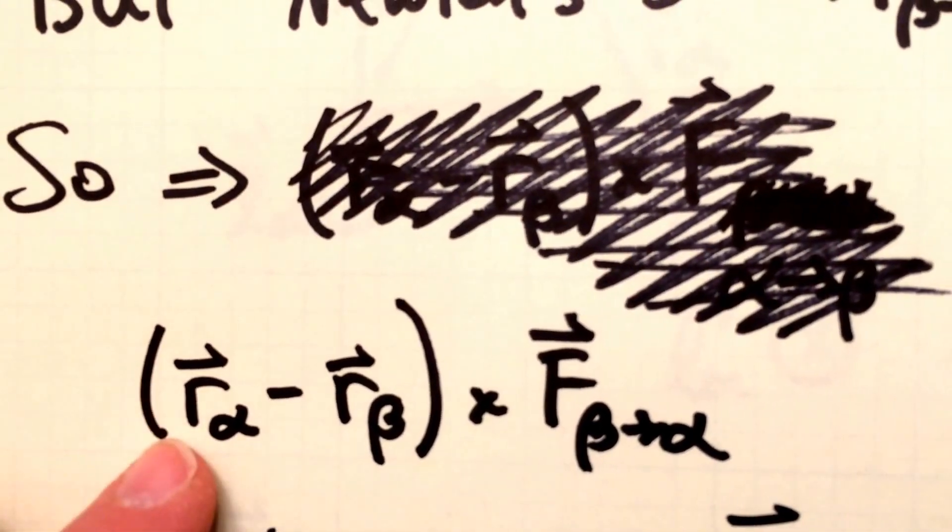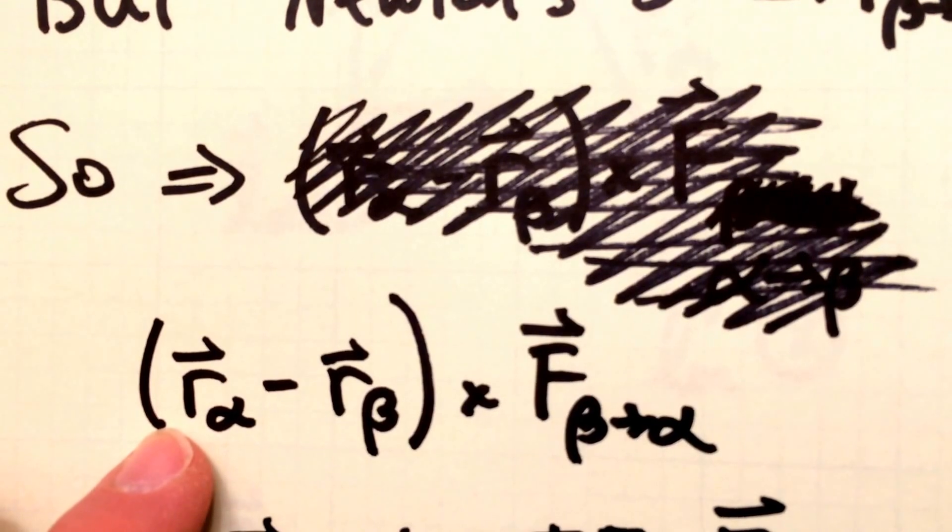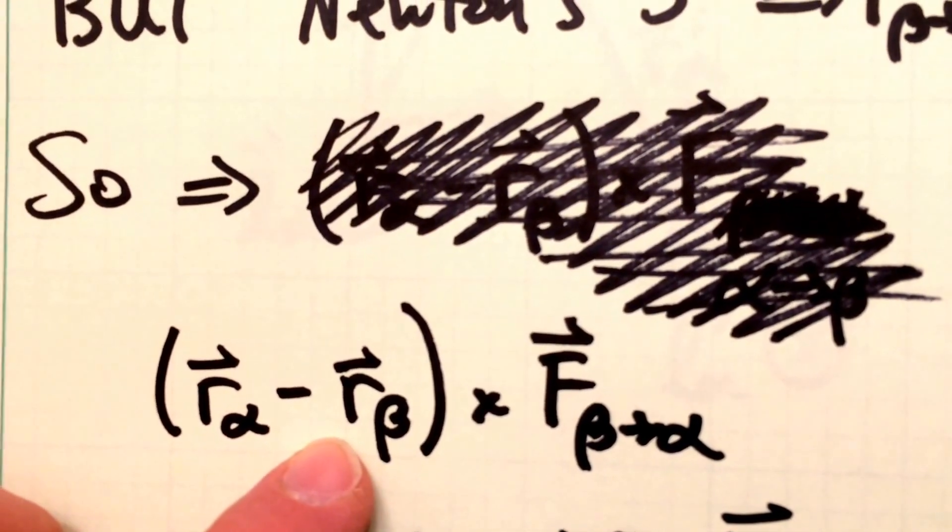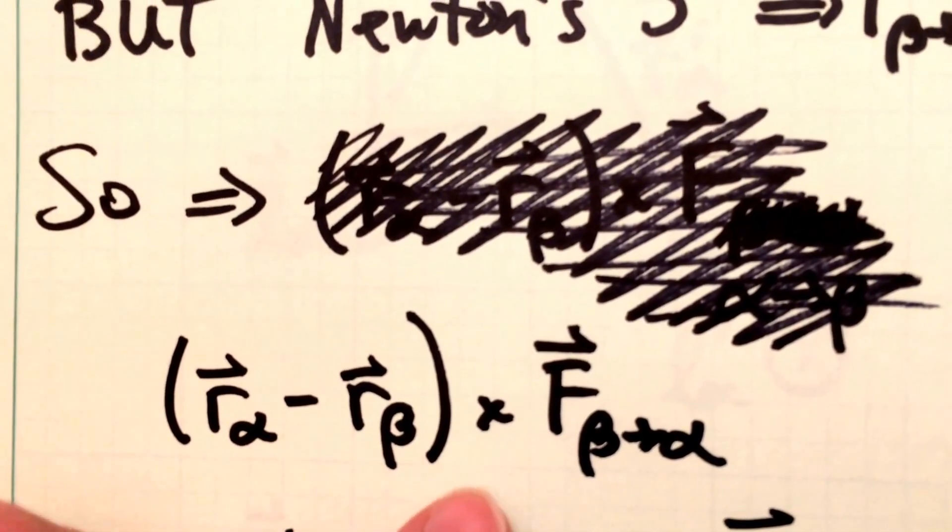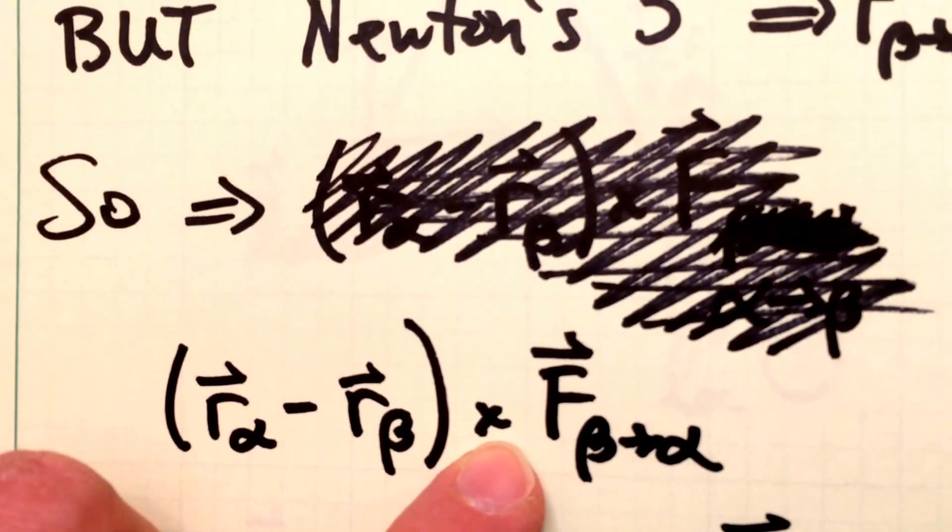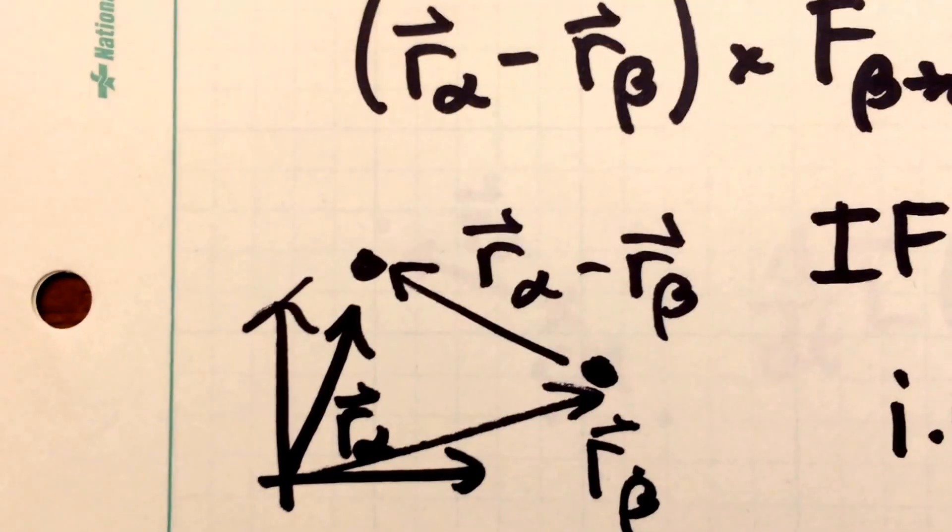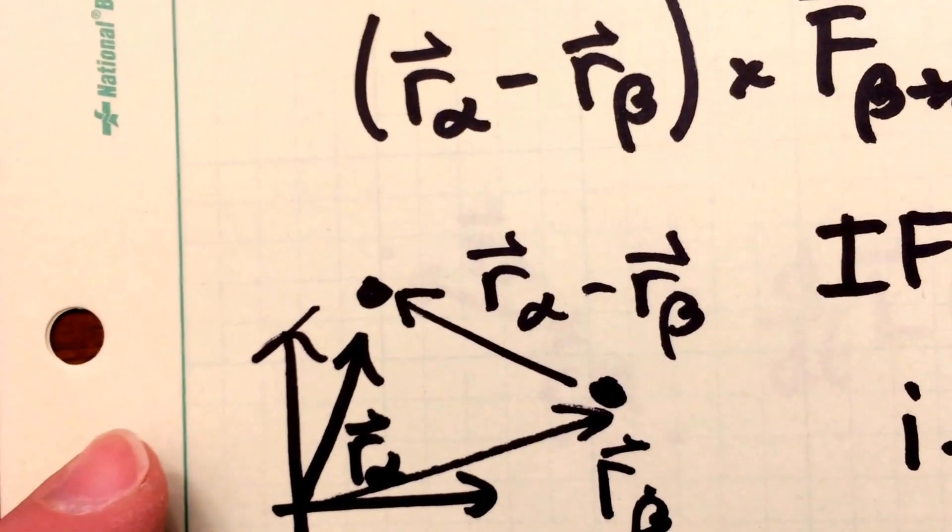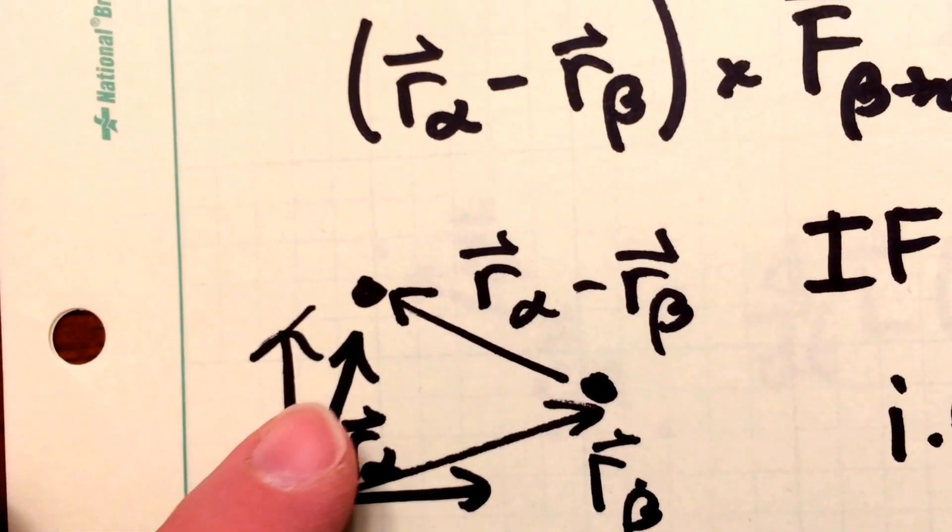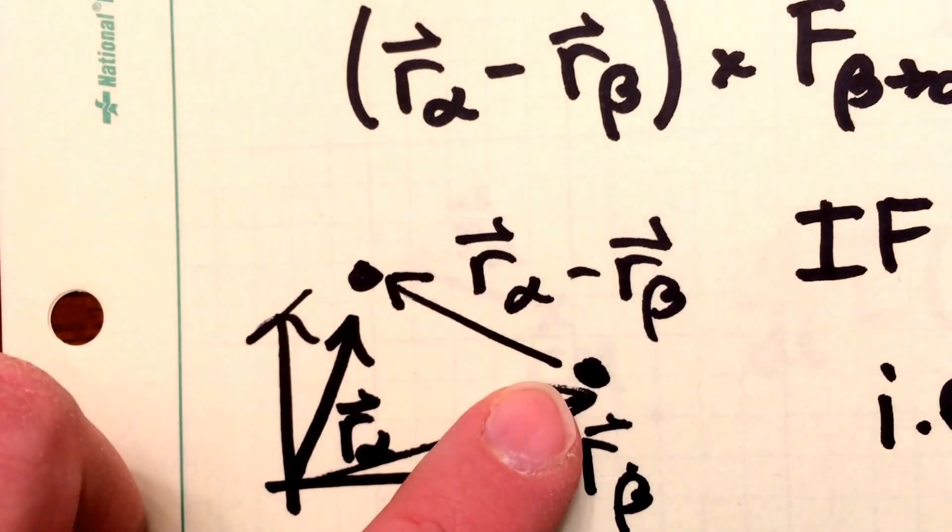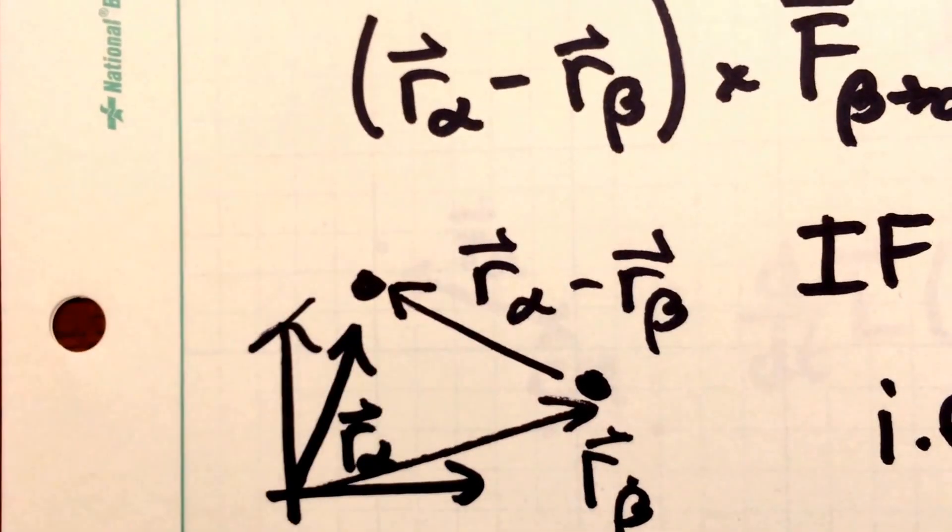So now we have vector r alpha being subtracted, vector r beta, and all of that crossed into the force of particle beta on alpha. This little diagram right here shows what the difference between r alpha and r beta is. It's basically a vector that points from particle beta to particle alpha.